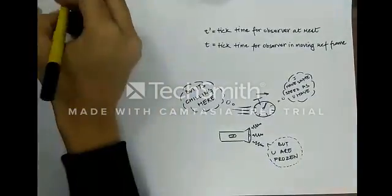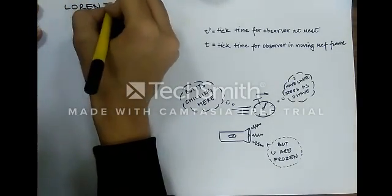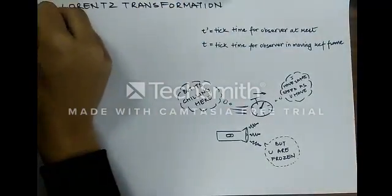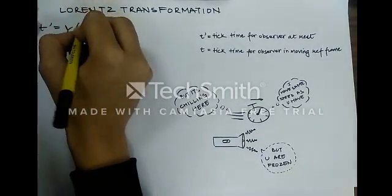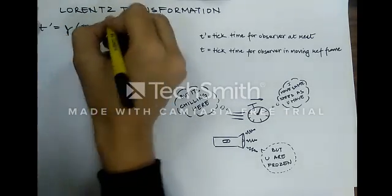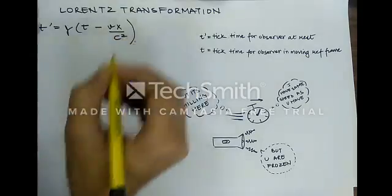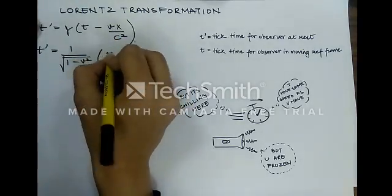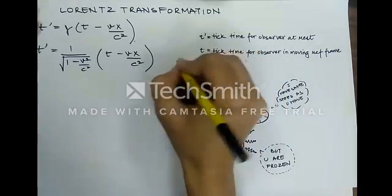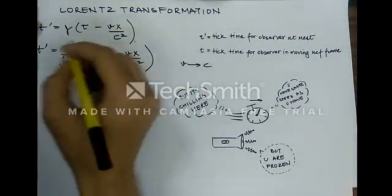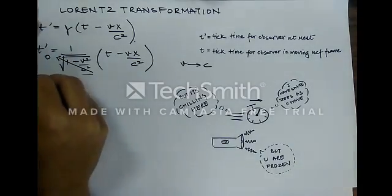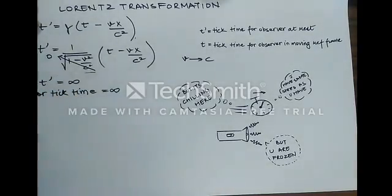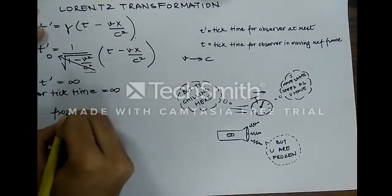This can also be explained in terms of Lorentz transformation. Which says that t' equals gamma times the tick time for the observer in moving frame of reference minus vx divided by c squared. Which is t' equals 1 over square root of 1 minus v square by c squared into t minus vx by c squared. As v approaches c, the term in the denominator becomes 0 and that t' become infinity or the tick time become infinity. Again we arrive at the same old result that the clock is frozen.